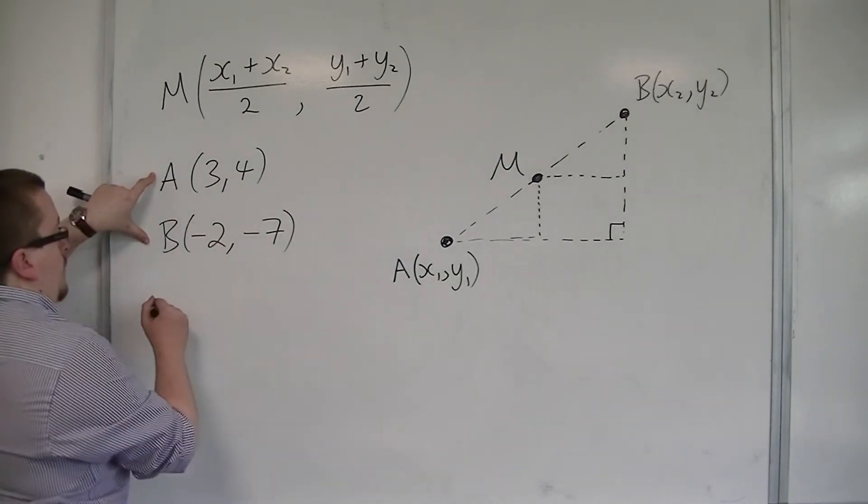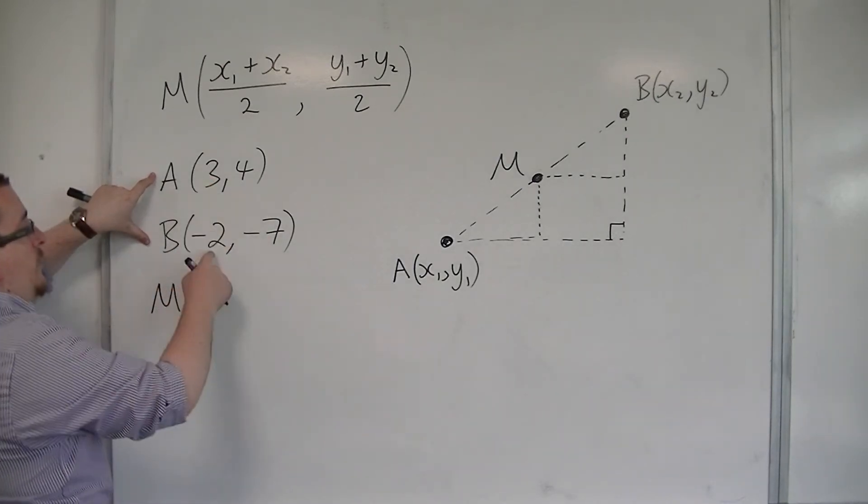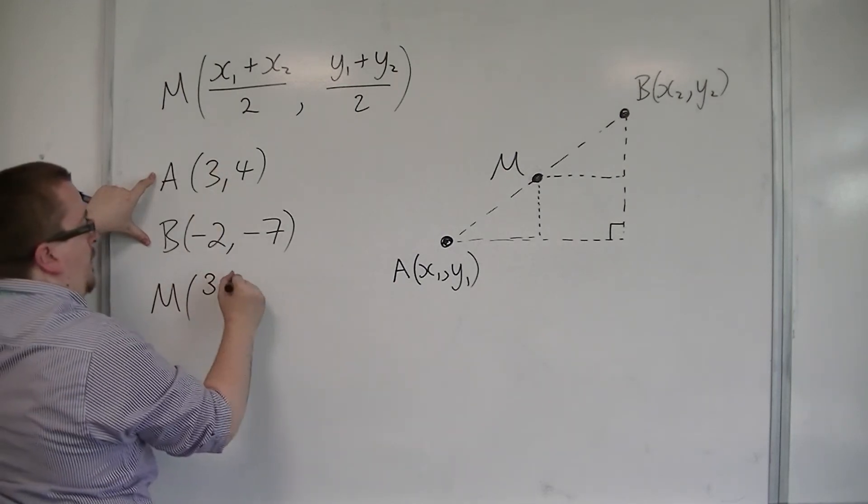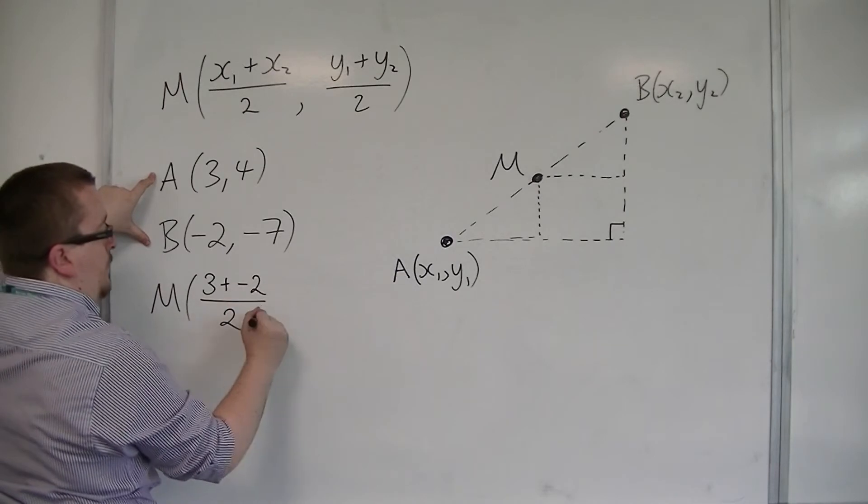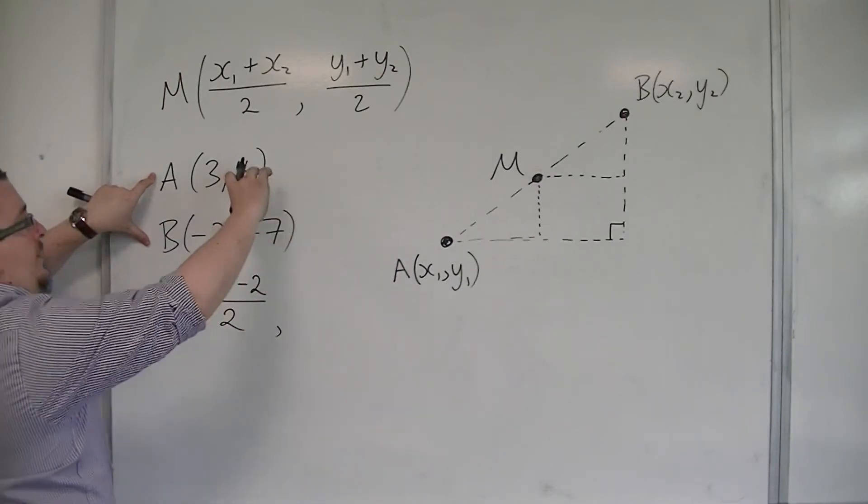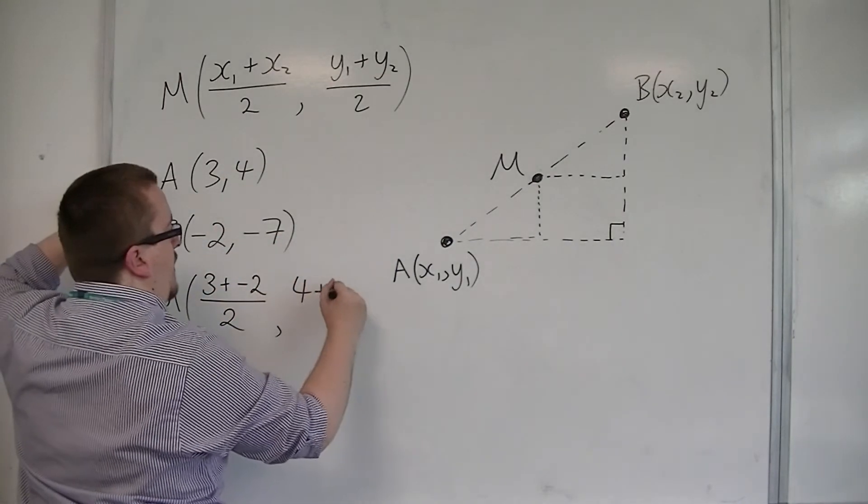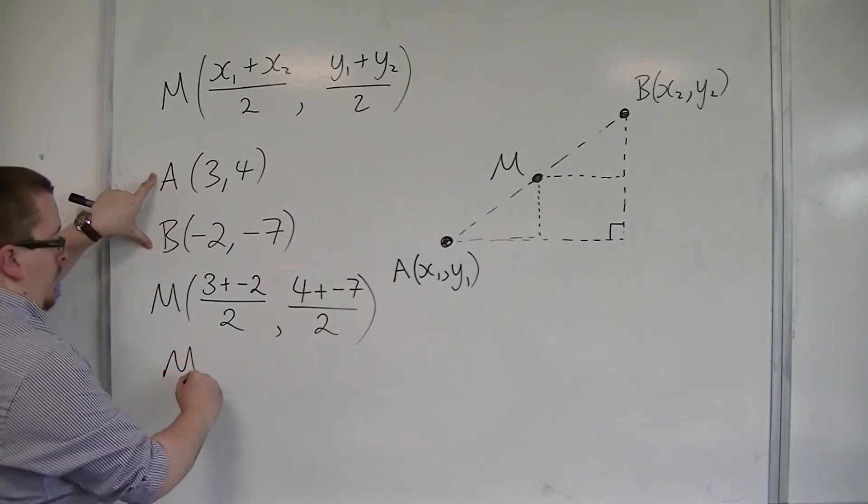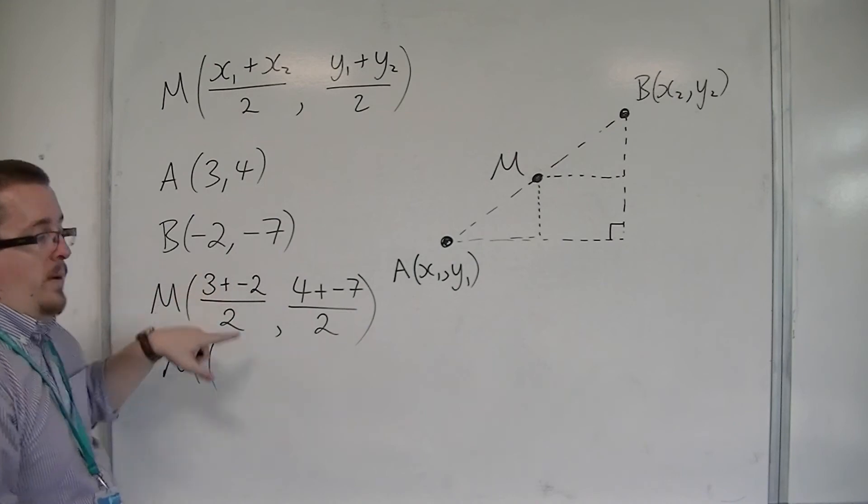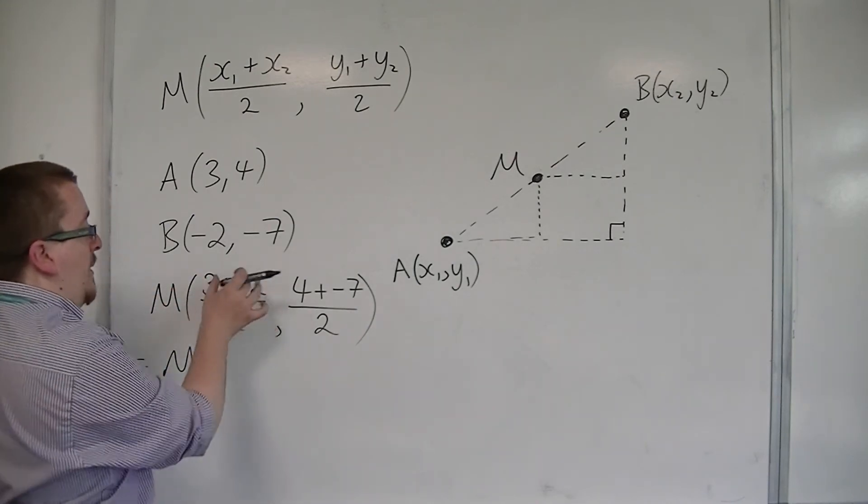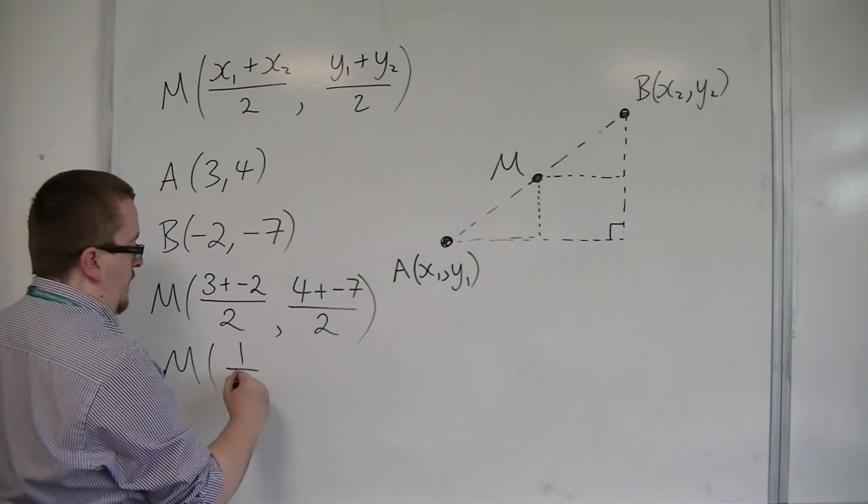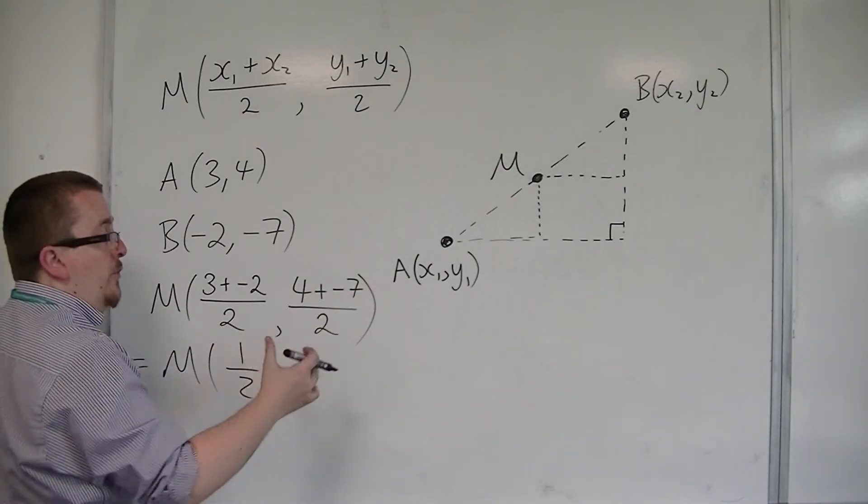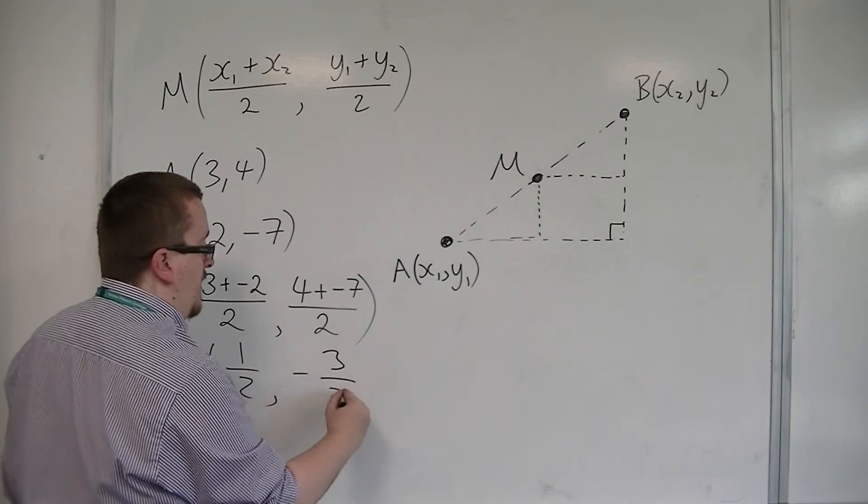So what I can do is I can add the x-coordinates together. So 3 plus minus 2 over 2, and y-coordinates, 4 plus minus 7 over 2. And so 3 plus minus 2 is the same as just 3 take away 2, so we have 1 over 2. And the y-coordinate is 4 take away 7 over 2, so minus 3 halves.